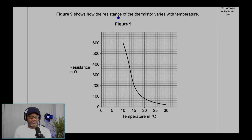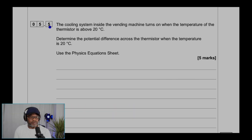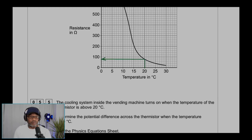Figure 9 shows how the resistance of the thermistor varies with temperature, with resistance in ohms and temperature in degrees Celsius. For question 5.5, the cooling system turns on when the thermistor temperature is above 20 degrees Celsius. To determine the potential difference across the thermistor at 20 degrees, we read the graph: drawing a line up from 20 degrees and across gives a resistance of 80 ohms.